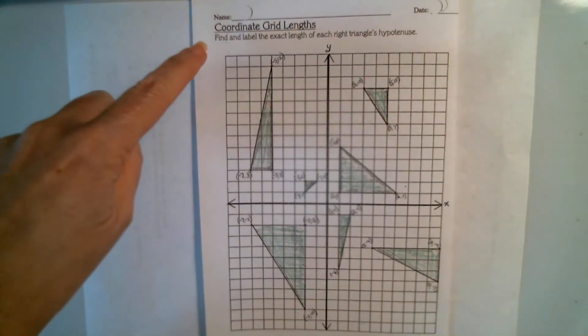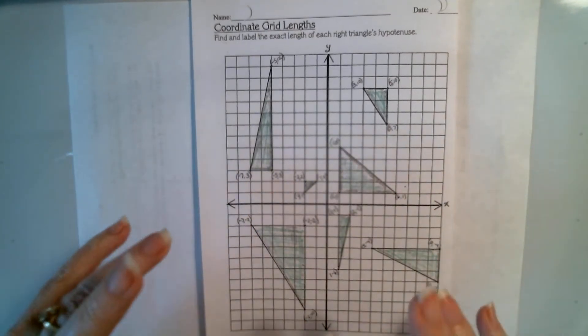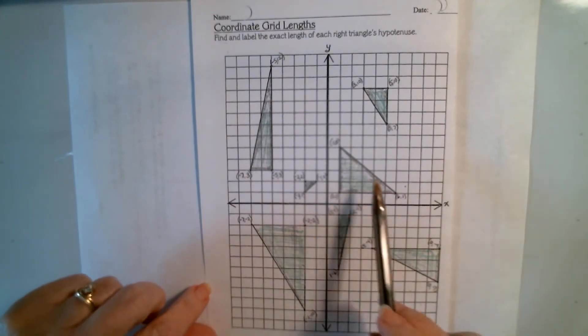So this is about coordinate grid lengths. We have a coordinate grid because we have an x-axis and a y-axis, and all the grid behind it allows me to plot ordered pairs, those x-y pairs.